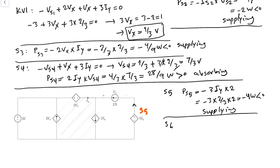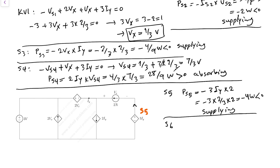For S6, the last source, the voltage across it is Vx and the current is 2A. The current exits from the positive terminal so we again use negative sign convention: Ps6 equals minus Vx × 2 equals minus (1/3) × 2 equals minus 2/3 W, which is less than zero — so S6 is also supplying power.